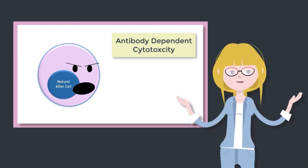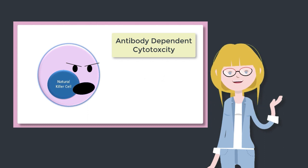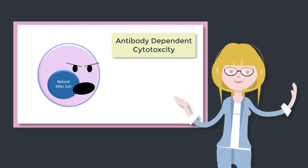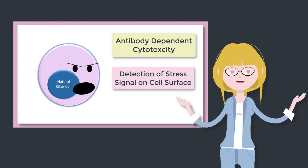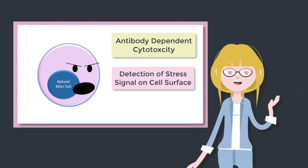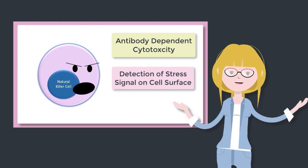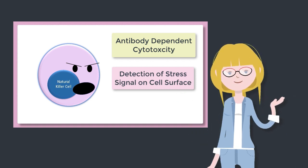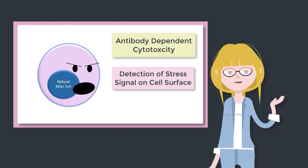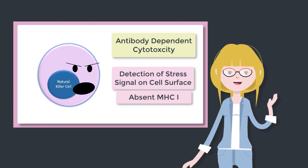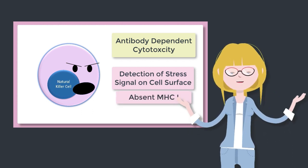The second circumstance in which NK cells do their thing is the detection of stress signals on the cell surface. These stress signals might be due to infection, but can also occur in tumor cells.